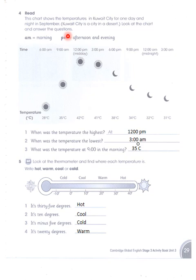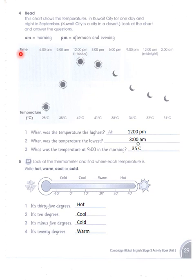AM means morning; PM means afternoon and evening. On this line, the time is shown, and on this line, the temperatures are shown.